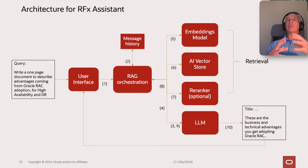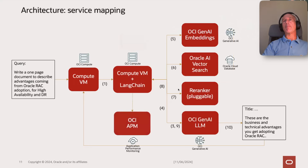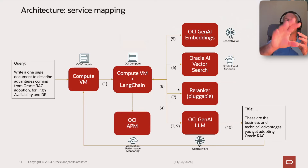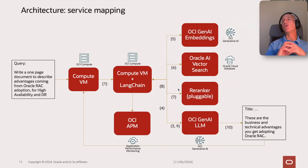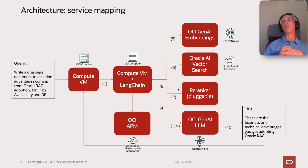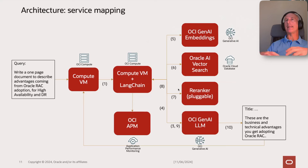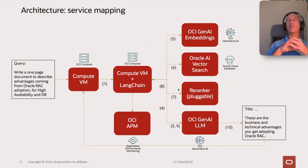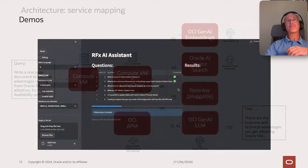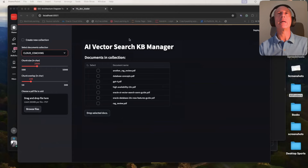Mapping these conceptual building blocks to cloud services: the services on the right are OCI Generative AI for embeddings and for the large language model. For AI Vector Search we use Oracle Database in the cloud. Another interesting area I am working on — which will be the subject of another cloud coaching session towards the end of summer — is the integration with Application Performance Monitoring. Now let's go to demo number three.